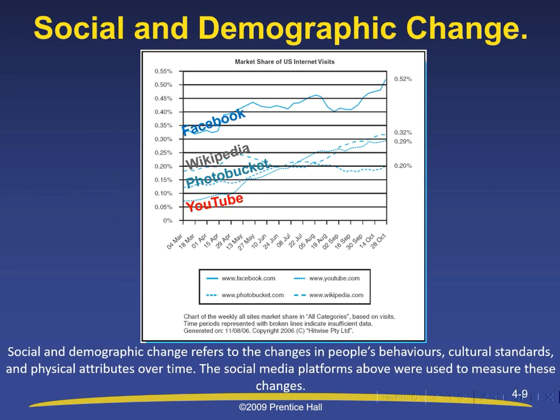Social and demographic change refers to the changes in people's behaviors, cultural standards, and physical attributes over time. The social media platforms shown were used to measure these changes. Looking at the y-axis on the left, we can see social and demographic change starting from 0% to 0.55%, and on the x-axis from 4th of March to 28th of October.